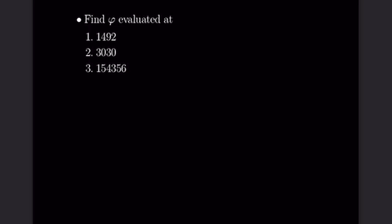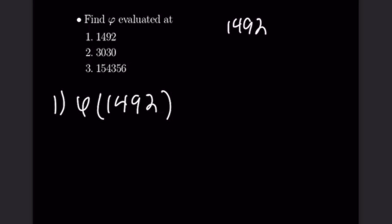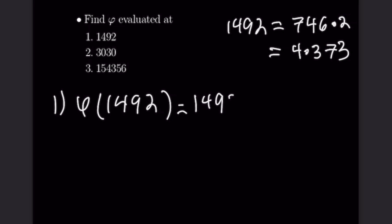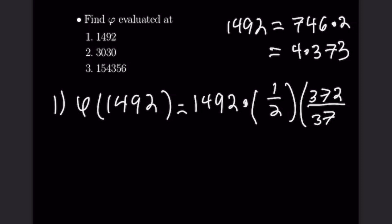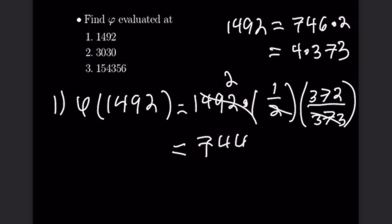For our third problem we're calculating φ for several integers. Starting with φ(1492): we factor 1492 by dividing by 2 to get 746 × 2, then divide by 2 again to get 4 × 373, where 373 is prime. So φ(1492) = 1492 × (1/2) × (372/373). Canceling gives 2 × 372 = 744.